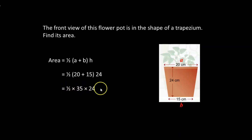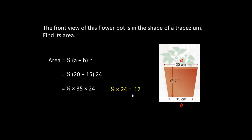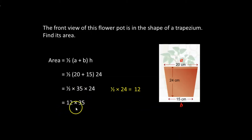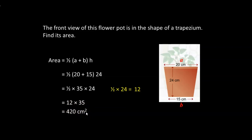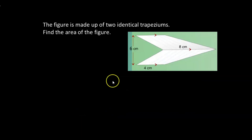Instead of multiplying half times 35 — which would give a decimal — I'll take half times 24, which is 12. So we have 12 times 35, and when we multiply 12 times 35 the answer is 420 square centimeters.